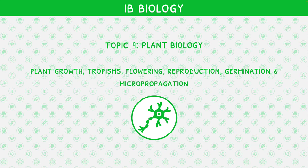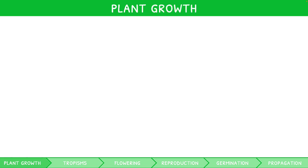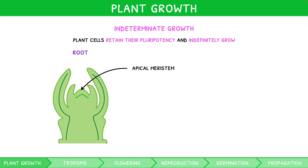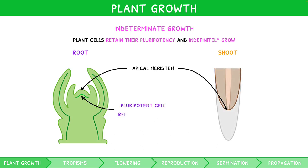Plants divide by mitosis, introduced in our IB Biology Topic 1 video series. However, through organising their cells carefully, they can retain their pluripotency and indefinitely grow through what is known as indeterminate growth. The structures responsible for this are known as apical meristems, found on the tips of stems and roots. During a single mitotic division, one pluripotent cell remains in the meristem to continue growth, whilst the other differentiates and is pushed away. It is this organisation that enables retention of pluripotency.